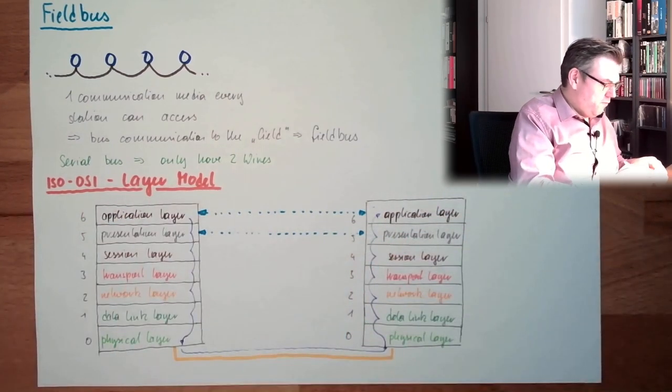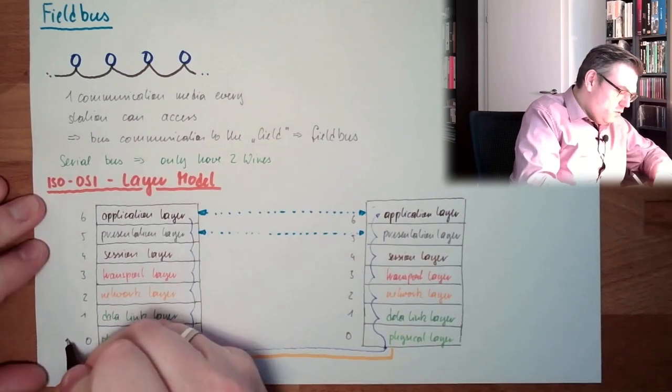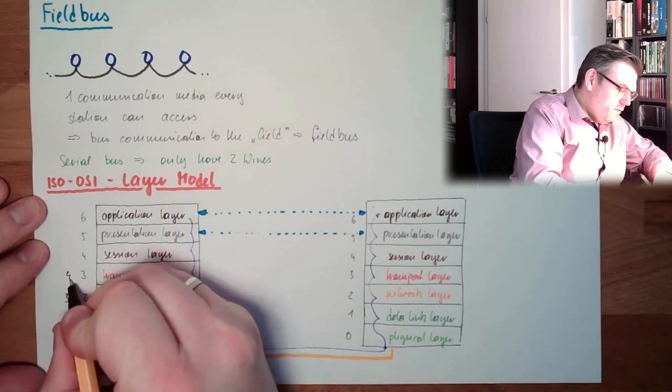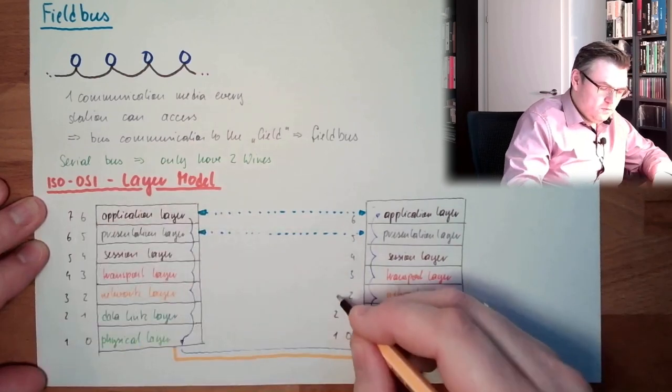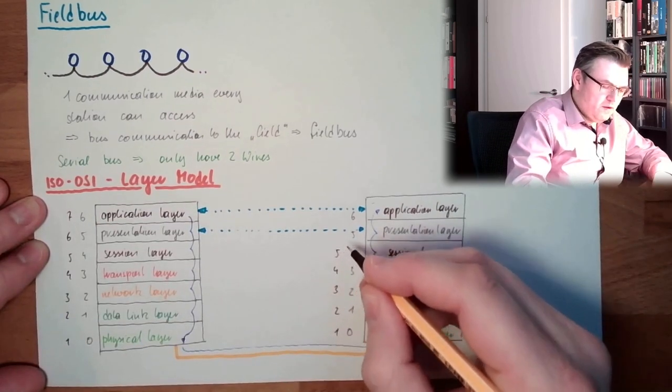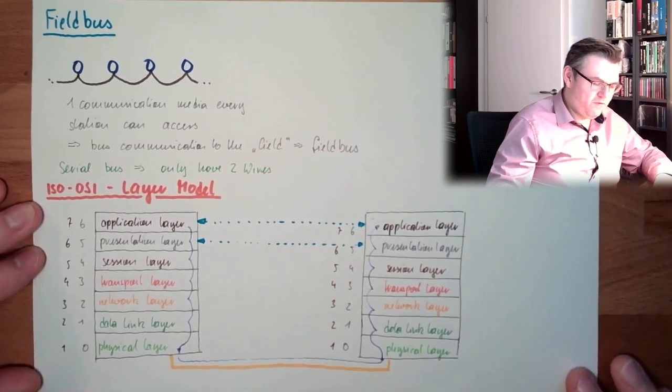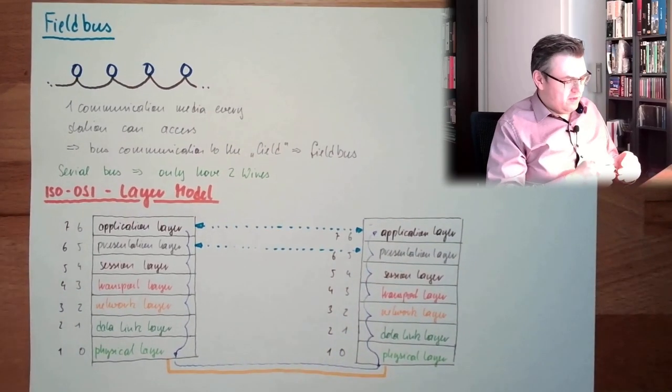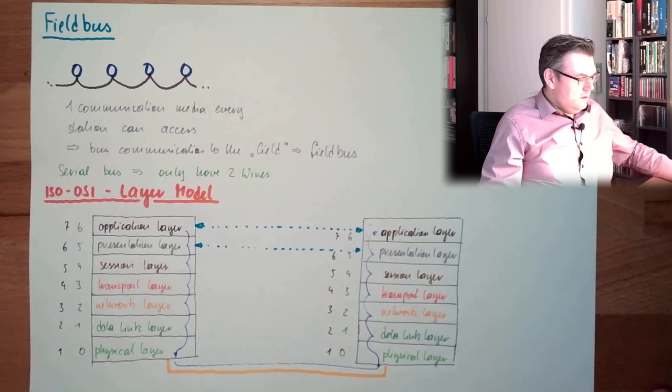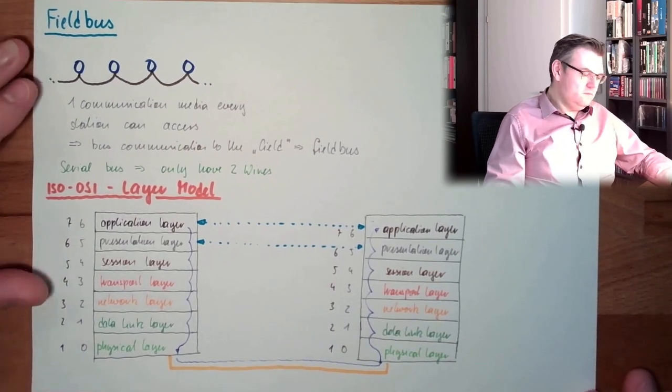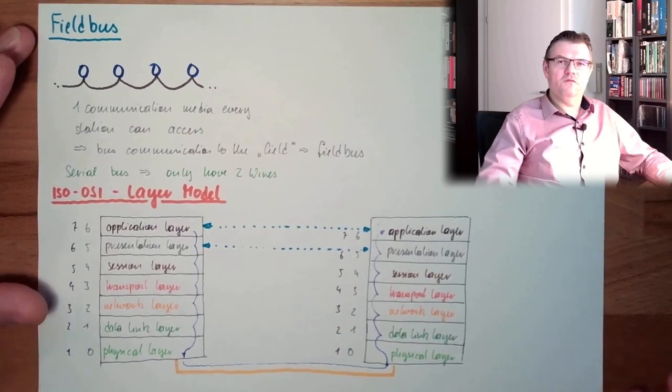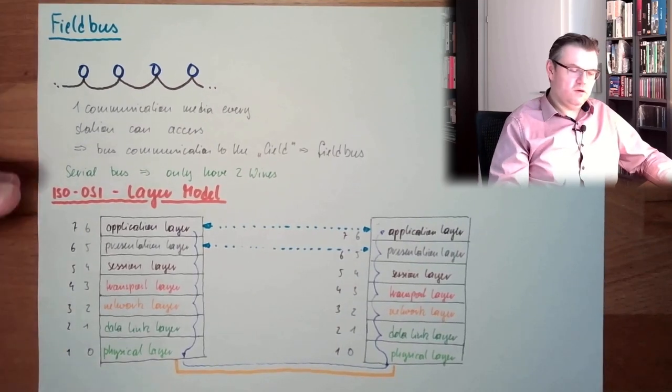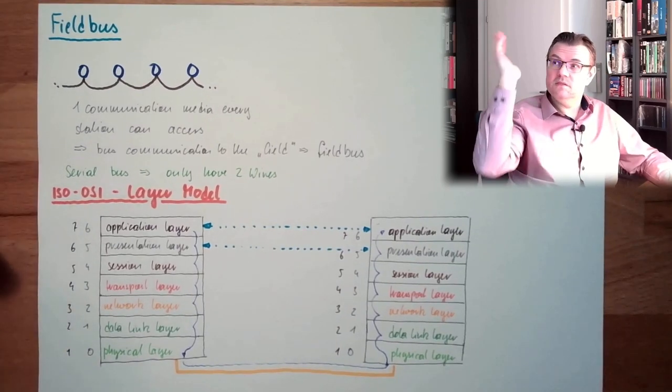Or if you want to start with one, then this would be one, two, three, four, five, six, seven. You can find both variants. Application layer is simply - I have an application, I want to transmit this data chunk or whatever. I want to load this website.